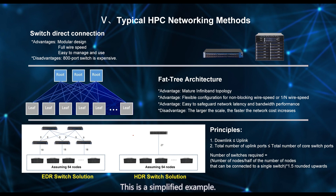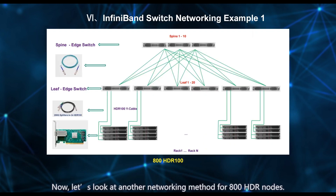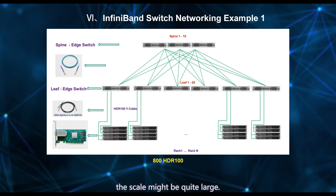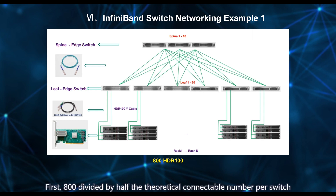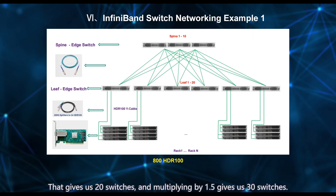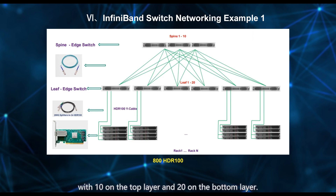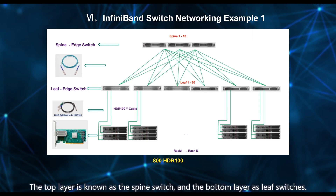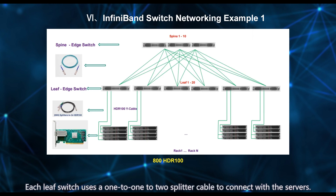Now let's look at another networking method for 800 HDR nodes. Using the formula above: 800 divided by half the theoretical connectable number per switch. With 40 ports, each connecting to 2 nodes via splitter cables, you can connect 80 nodes, so half is 40. That gives us 20 switches, and multiplying by 1.5 gives us 30 switches. So if we use HDR 40-port switches, we would need 30 switches, with 10 on the top layer and 20 on the bottom layer. The top layer is known as the spine switch, and the bottom layer as leaf switches. Each leaf switch uses a 1-to-2 splitter cable to connect with the servers.